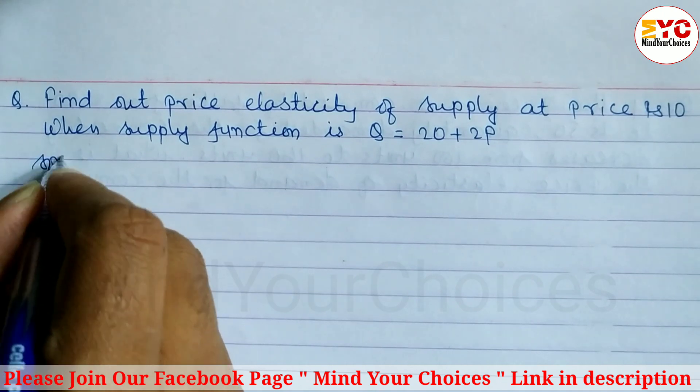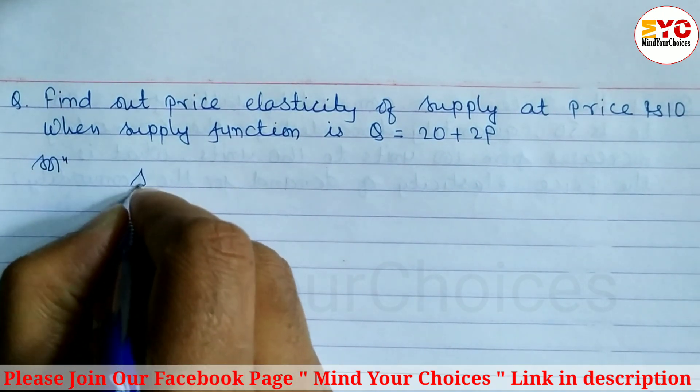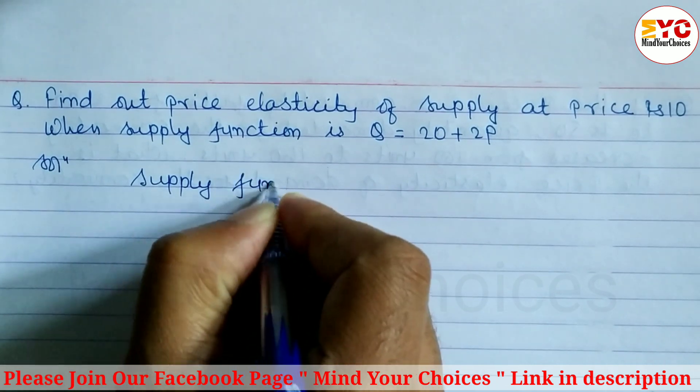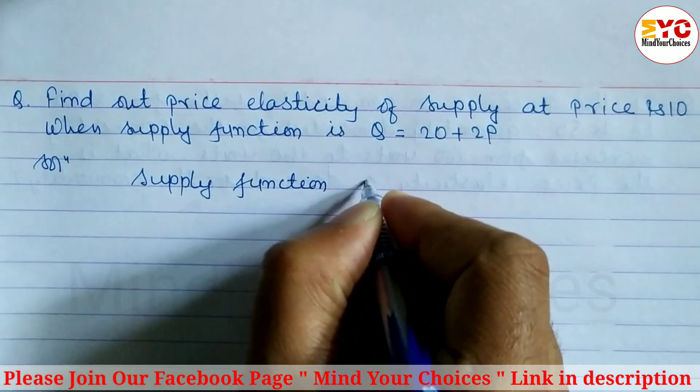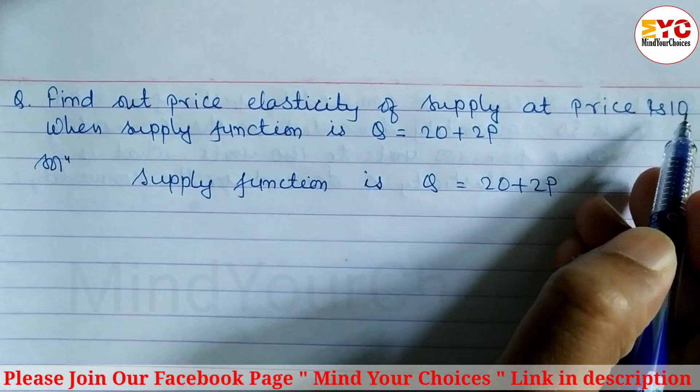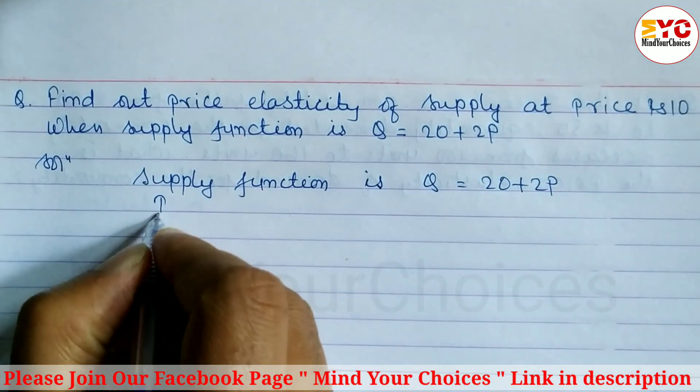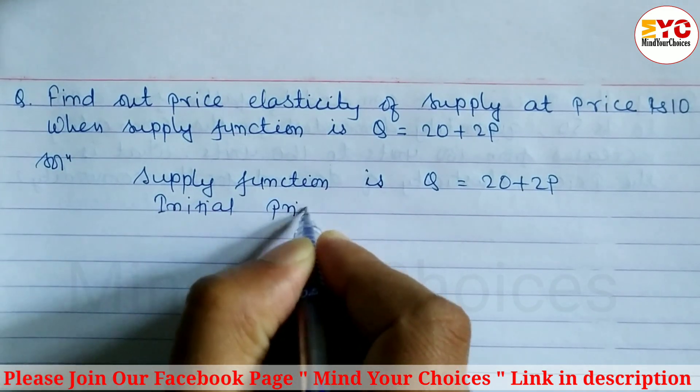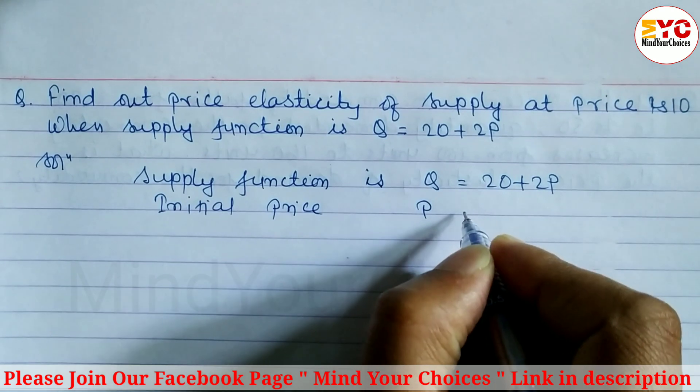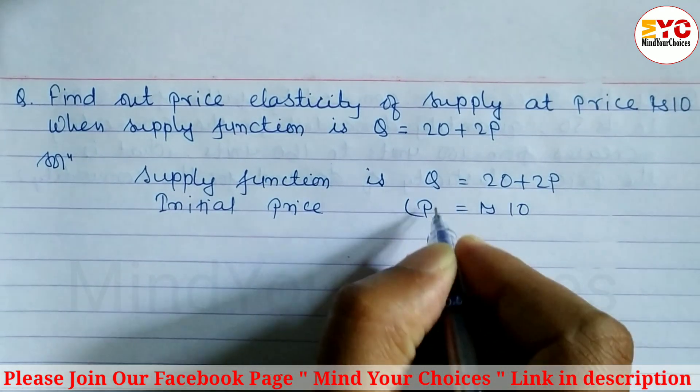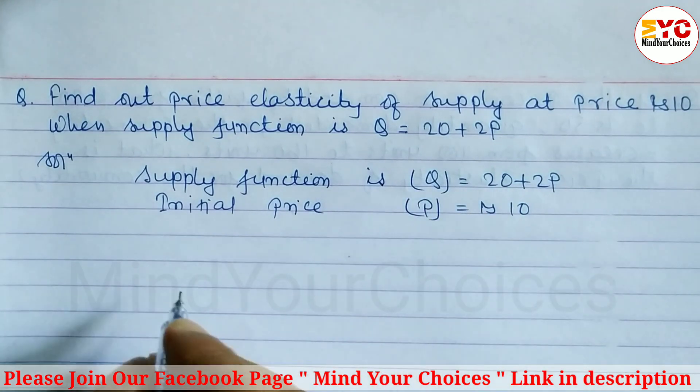So let's take a start. First of all here supply function is given, so write down here: supply function is Q is equal to 20 plus 2P and initial price is given. So we have to write here initial price, P is equal to rupees 10.